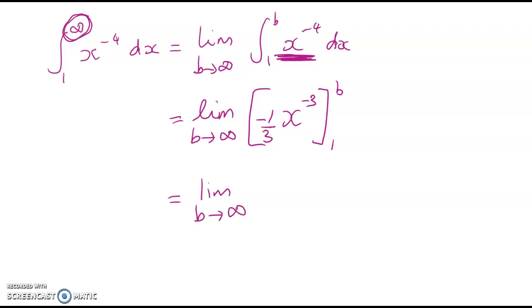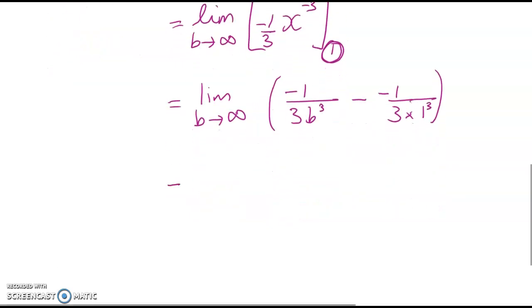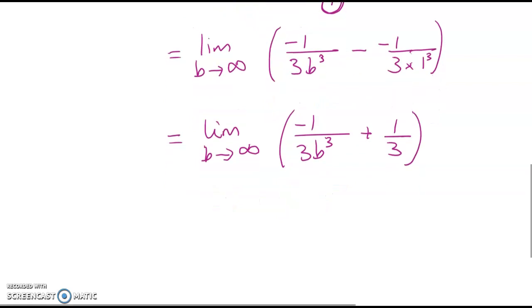So we've got the limit as b goes to infinity. Now I'm going to substitute the stuff in and write it in a slightly more useful form. We've got negative 1 third, negative 1 over 3 b cubed minus negative 1 third, and then 1 to the power of negative 3 is just 1. I'll clean up that middle expression, so just leave that like that for now and we've got plus 1 third. So the question is does this converge at all?